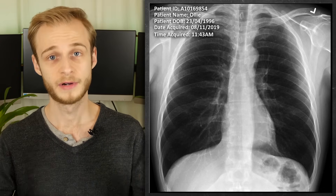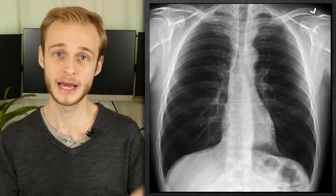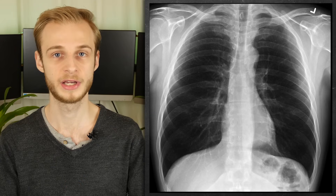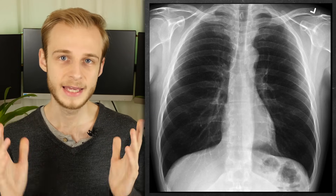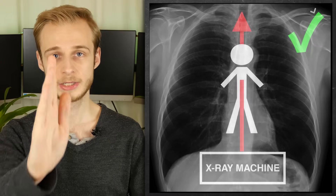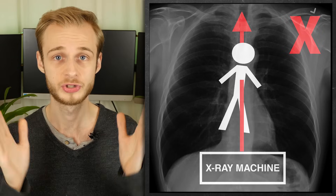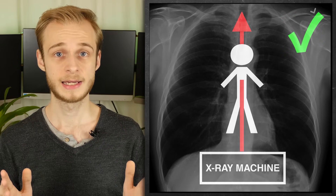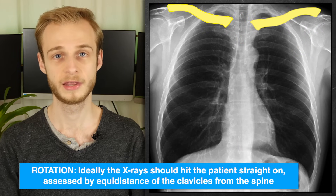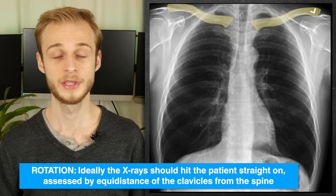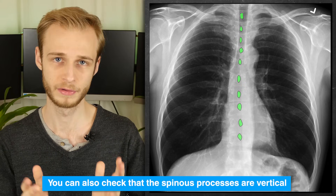The first part of our process involves assessing the quality of the x-ray image we have, and for this we use the mnemonic RIPE. We begin with R, which stands for rotation. Did the x-rays hit the patient straight on or at an angle? Ideally they should have been as straight as possible. This is assessed by looking for the medial parts of the two clavicles and checking that they're equidistant from the spine, and the spinous processes should also be vertical.